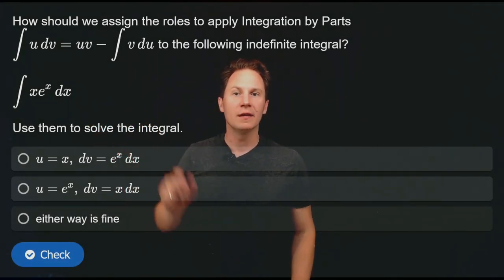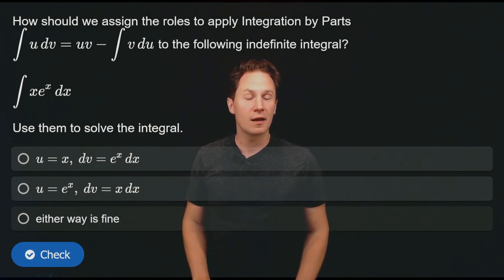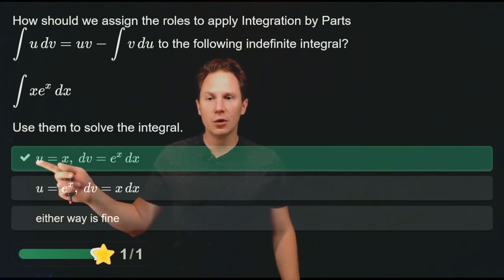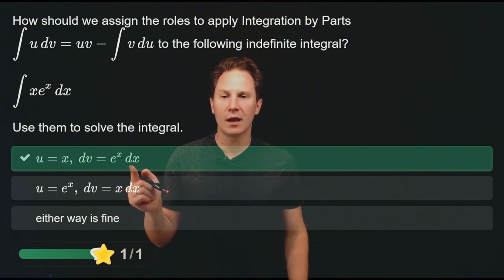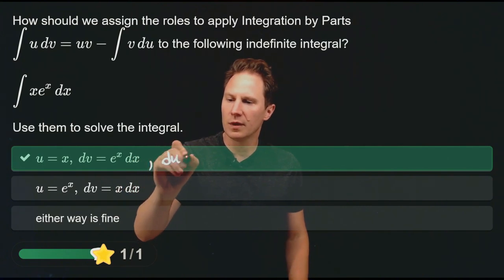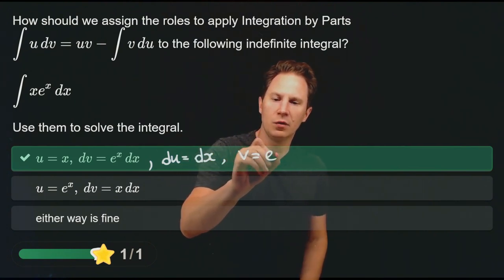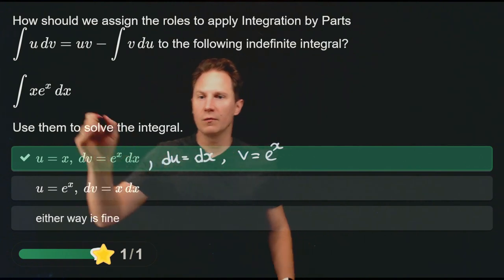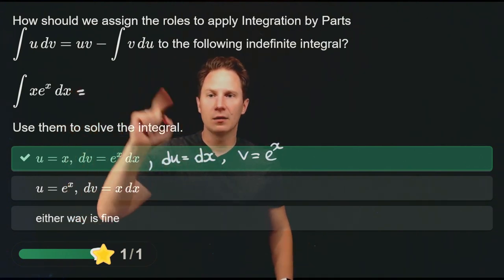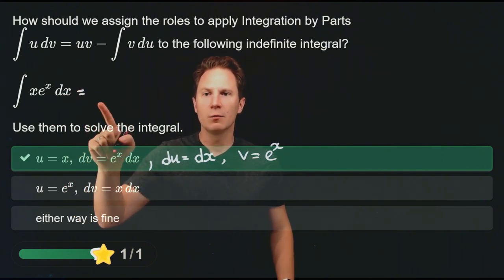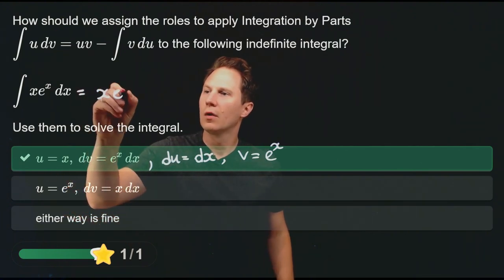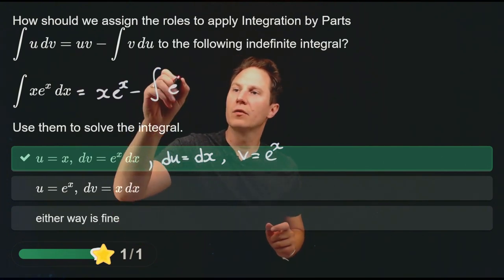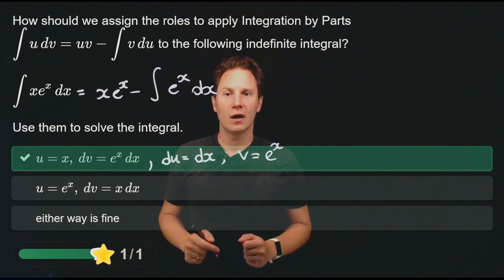Let's solve more problems using integration by parts. How should we assign u and dv in the integral of x·eˣ dx? Setting u equals x and dv equals eˣ dx means du is simply dx and v is eˣ. Integration by parts then gives us x·eˣ minus the integral of v·du, which is the integral of eˣ dx — simpler than what we started with.